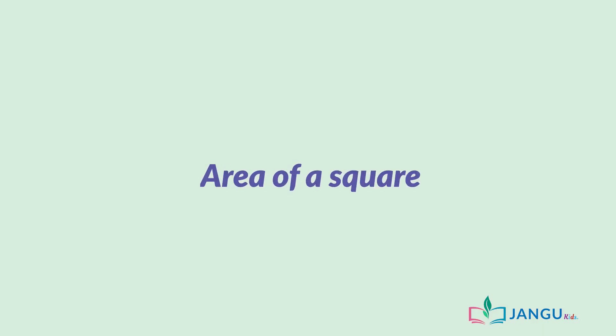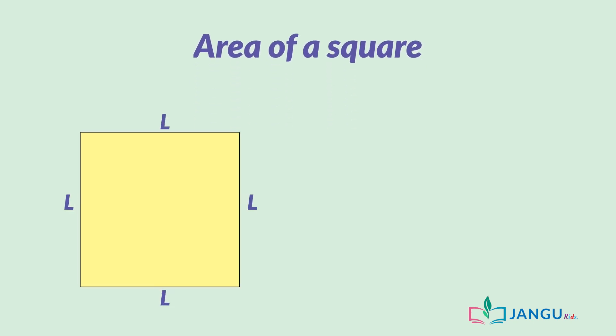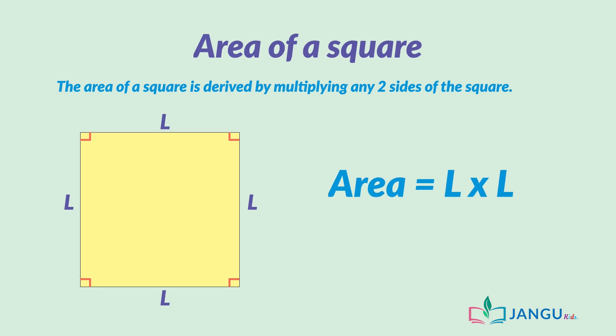Are you now wondering how the area of a square is calculated? Don't worry, it is quite easy. As we recall, a square has four equal sides and angles. So the area of a square is derived by multiplying any two sides of the square. This means the area of a square is equal to length times length.